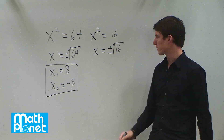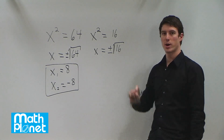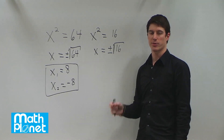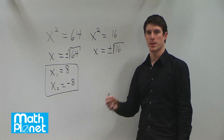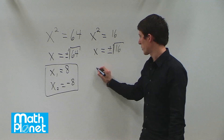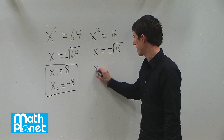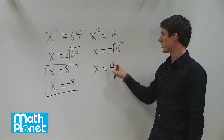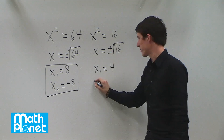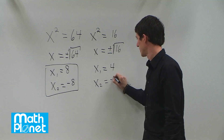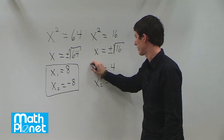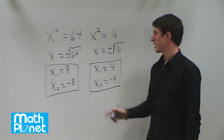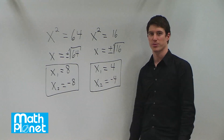Anytime we have a square root, it's plus or minus. Now we need to determine what number times itself gives us 16 — that's 4, since 4 times 4 equals 16. So we have two answers again: x1 equals positive 4 and x2 equals negative 4. Here we have two simple quadratic equations that we solved and got two different answers for.